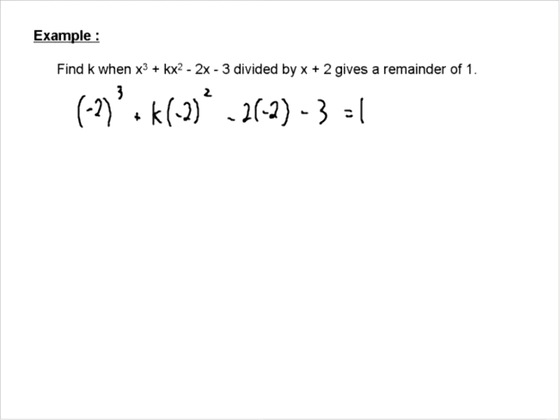Minus 2 cubed plus k times minus 2 squared minus 2 times minus 2 minus 3 is equal to 1. So that's just using the remainder theorem. We haven't solved anything, we haven't determined anything, we've just used the remainder theorem.